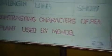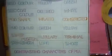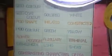Next are some of the contrasting characters of the pea plant used by Mendel in his genetics experiments — genes playing roles across various characters.